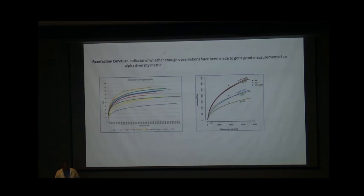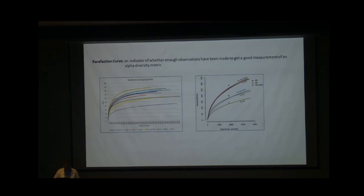If the rarefaction curve is still growing and not saturated, it means there is still scope for more samples to be added so all the information is captured. This is something very important, very easily missed, and nobody mentions it, yet everyone continues to work with insufficient sampling.